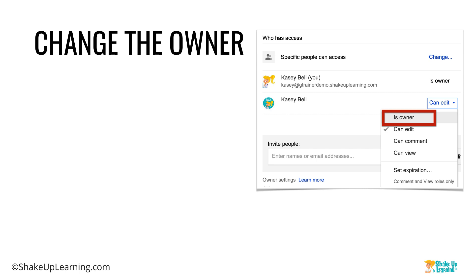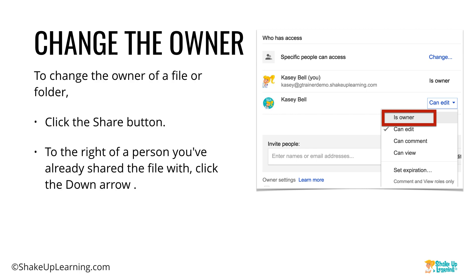You can also change the owner of a file. By default, when you create a file, you're the owner, but sometimes we need to give ownership to someone else. Click the share button, and next to the person's name — after they've already been shared with — you can change their role to owner. Note there are some restrictions in Google for Education: you typically can't make someone an owner who's outside of your domain. Just click that down arrow, make someone else the owner, and click done.